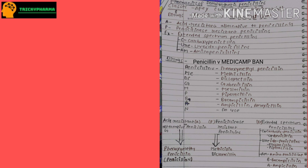Now for the drug mnemonics: 'Penicillin V' indicates phenoxymethyl penicillin, also known as penicillin V. In 'Medicamp': ME indicates methicillin, DI indicates dicloxacillin, CA indicates carbenicillin, M indicates mezlocillin, P indicates piperacillin, B indicates bacampicillin, and A indicates ampicillin and amoxicillin.